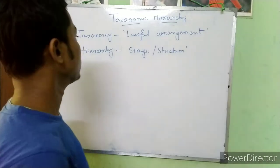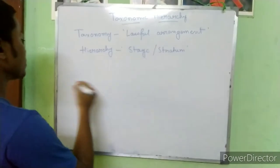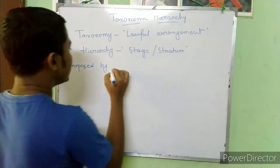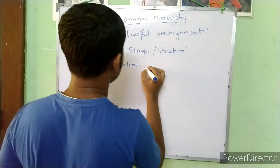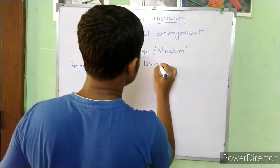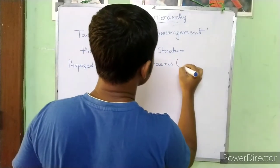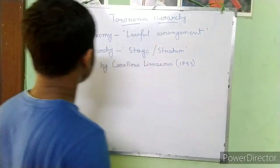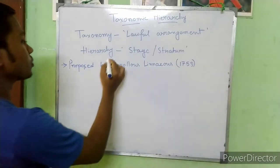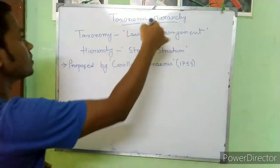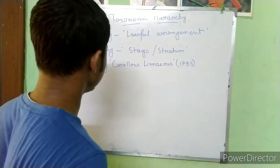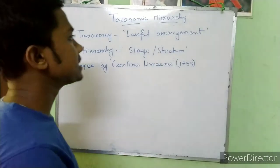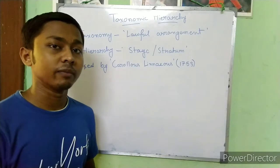Taxonomic hierarchy was first proposed by Carolus Linnaeus. So if we arrange organisms into categories, we follow this system proposed by Carolus Linnaeus.